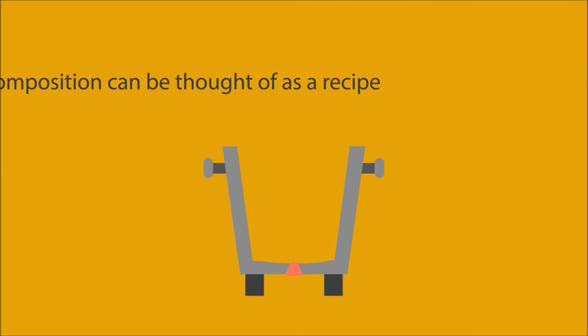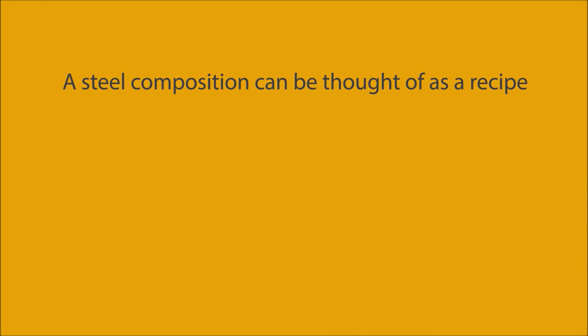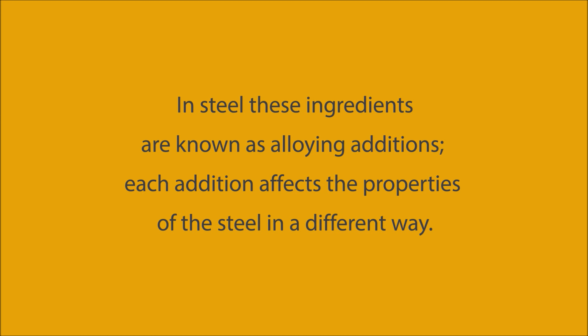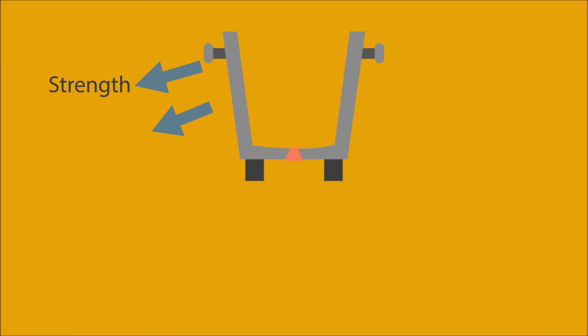A steel composition can be thought of as a recipe — different amounts of each ingredient make up your final product. In steel, these ingredients are known as alloying additions. Each addition affects the properties of the steel in a different way. Depending on the amount and type of alloying additions, we can affect the following properties: strength — the ability to withstand load in tension.